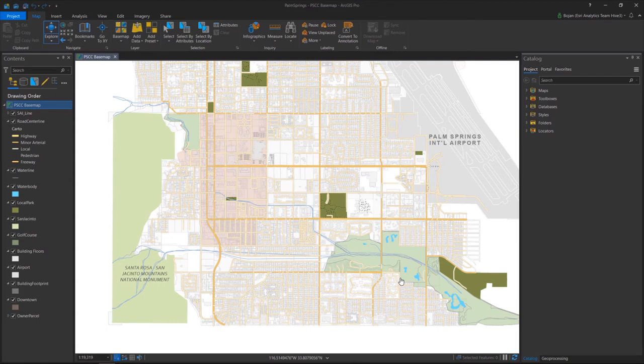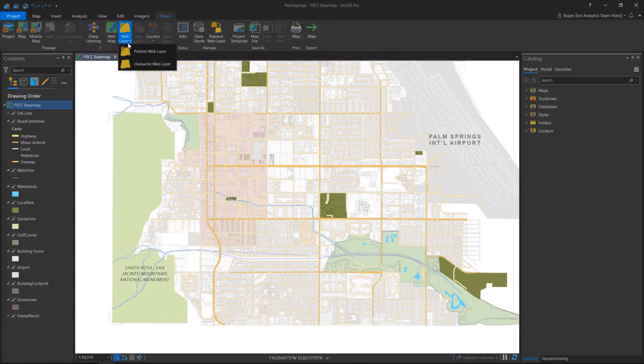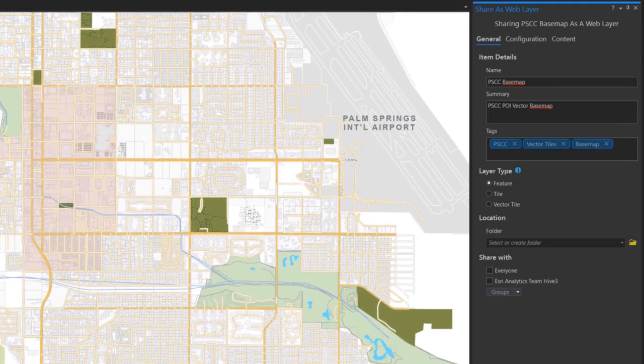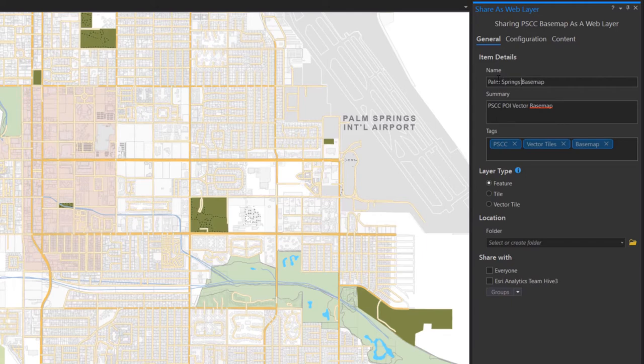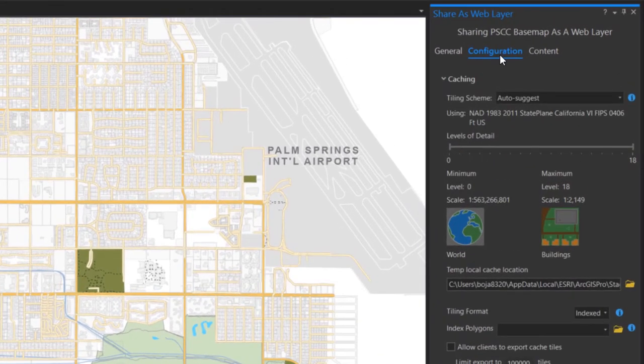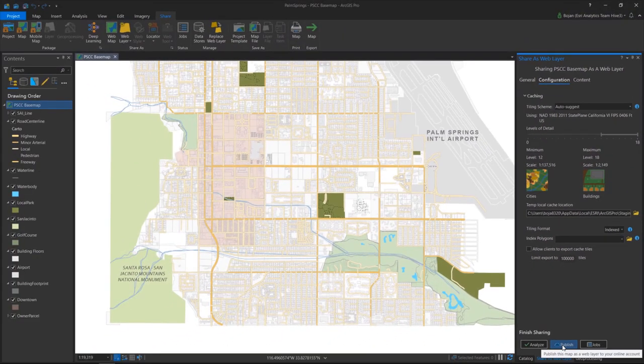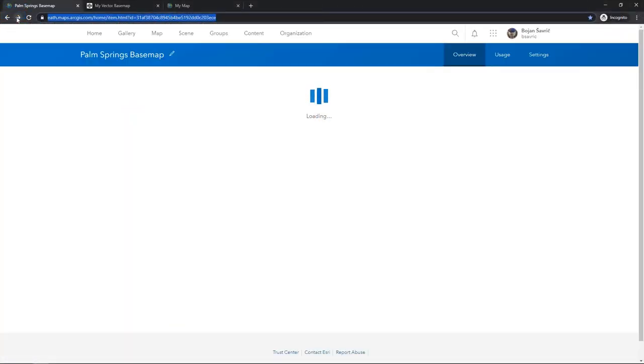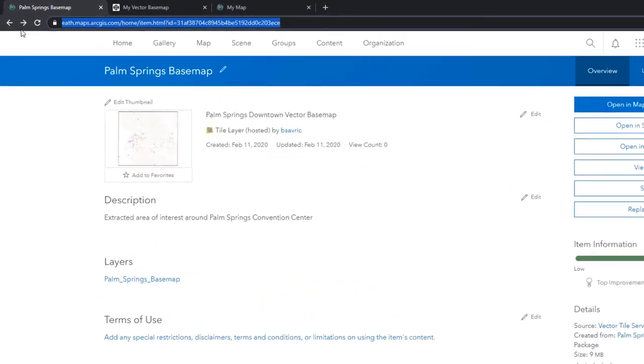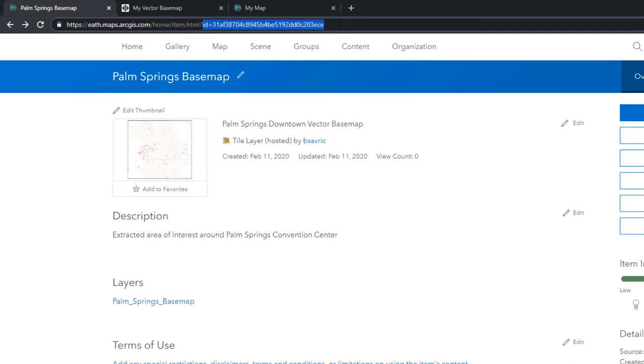Once data redraws, I am ready to publish my base map. I go to Share Ribbon. I select Web Layer and I click on Publish Web Layer. The Share as Web Layer pane opens on the right. I give it the name of the base map. And I provide a short summary of the map. Then I select the type. I want to have a vector tile type. On the Configuration tab, we can already see that the tiling scheme is already pre-populated to match our selected coordinate system. I adjust the level of detail for my map. Probably the cities are the best. And I will hit Publish.